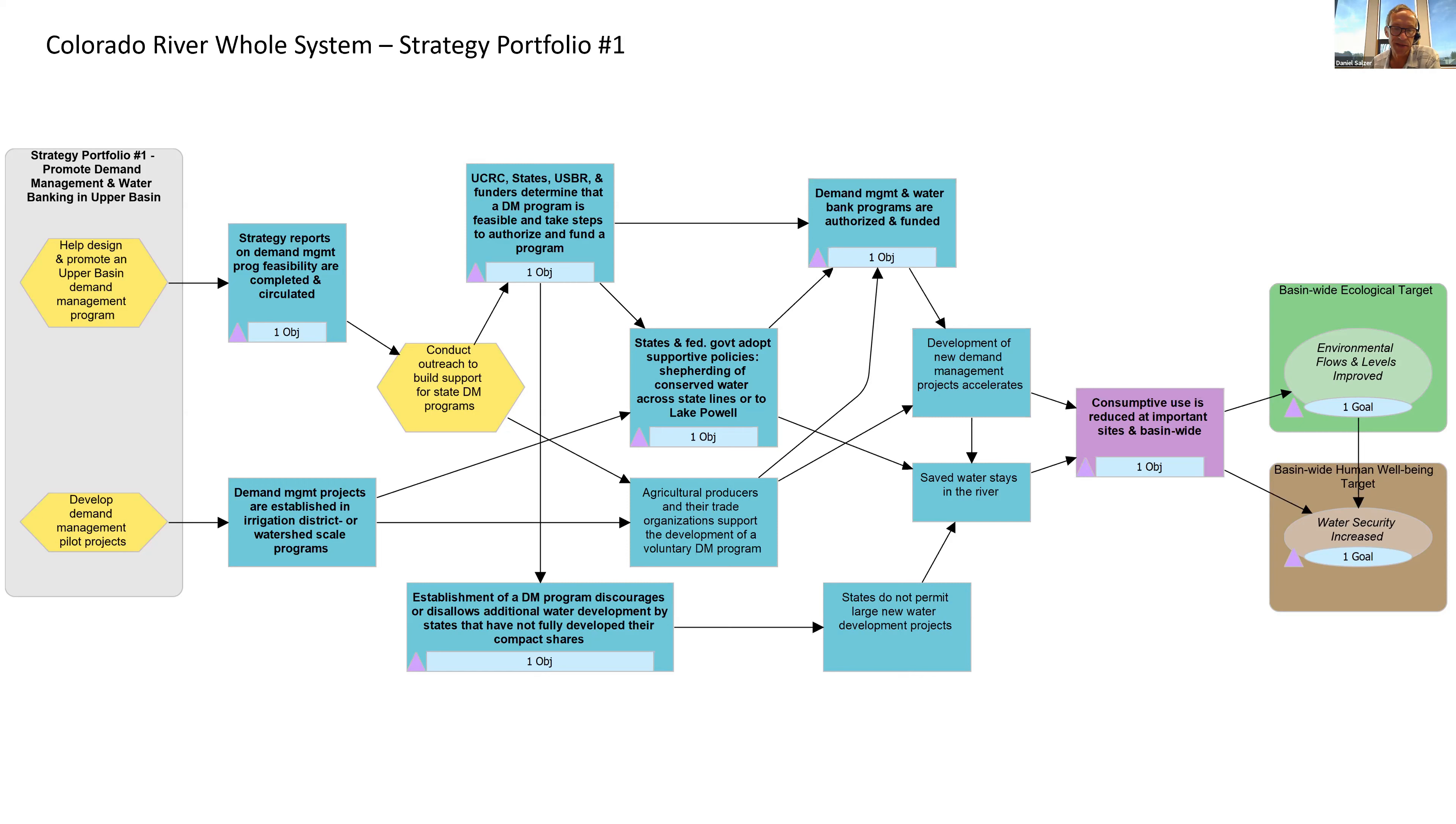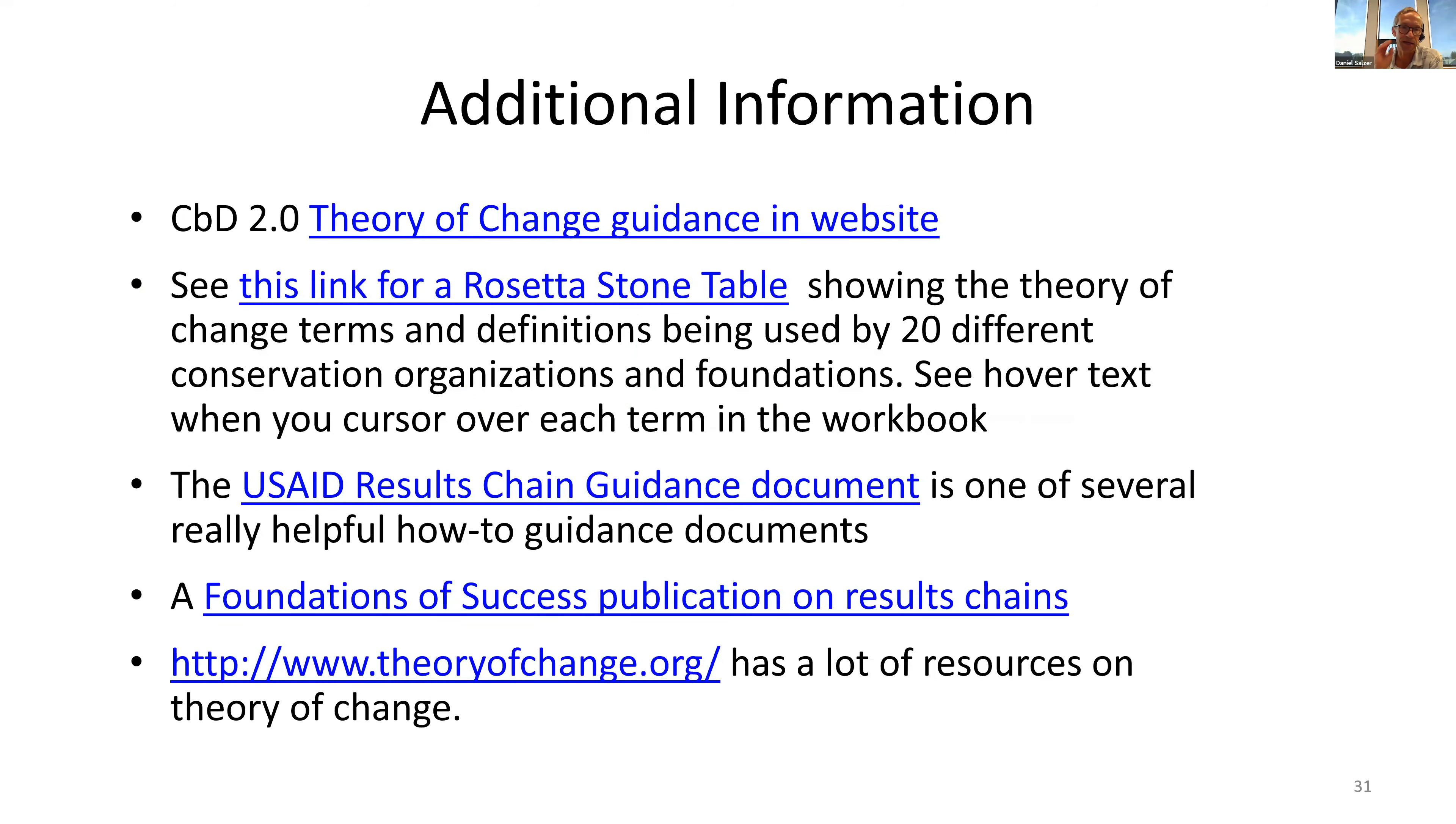I am going to show you in just a moment a summary of different types of theories of change when I looked at all 48 of the priority strategies. One of the slides I'll include when I post this to the box will have additional information links. This will take you straight to the guidance material in the CBD 2.0 website.